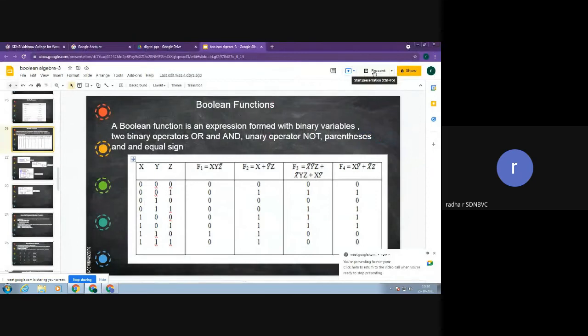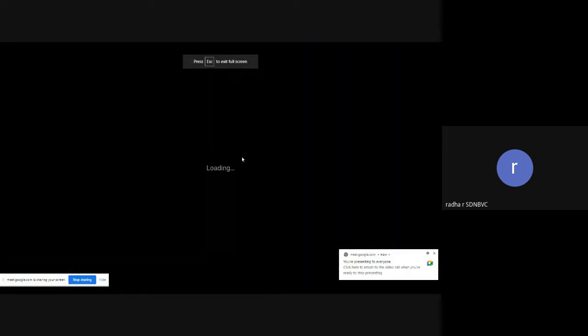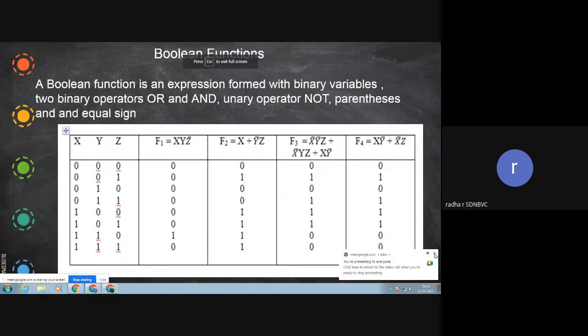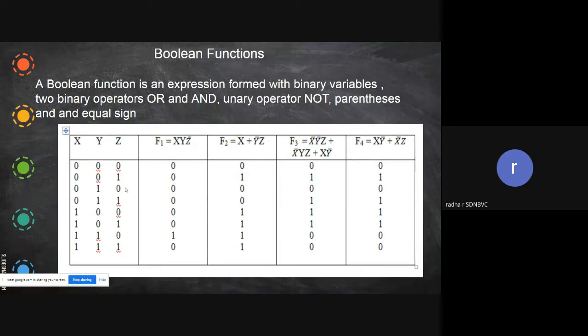We have seen Boolean algebra and Boolean functions. A Boolean function is when you have equations like this. A Boolean function can be formed with OR and AND operators and negation operator, within parentheses and equal sign. So the whole thing is said to be a Boolean function. This is what we have seen in the last class.